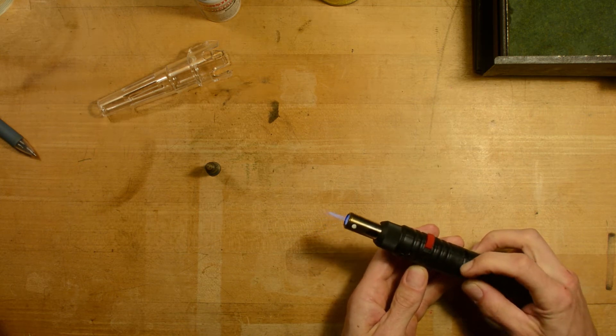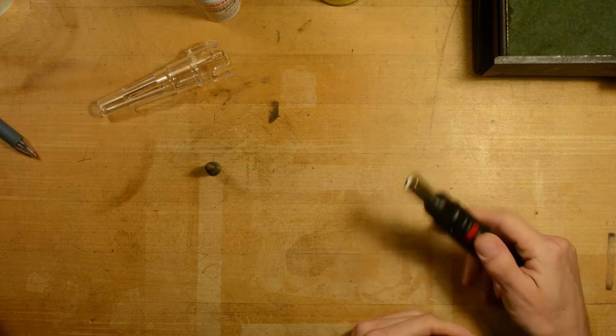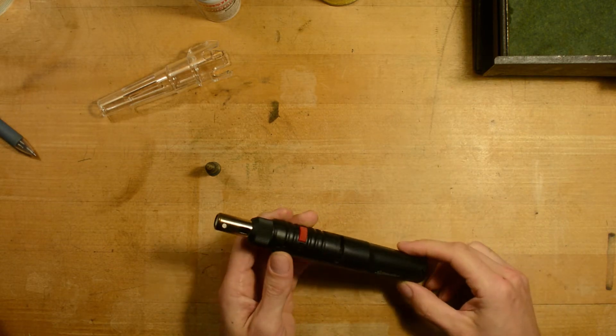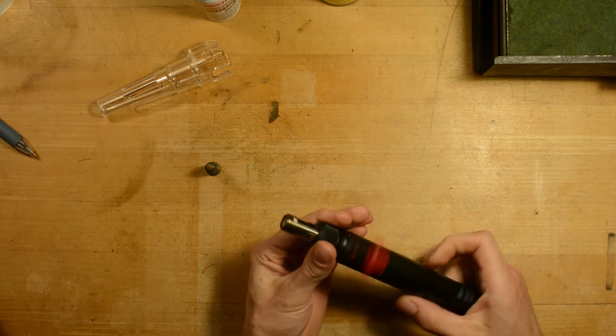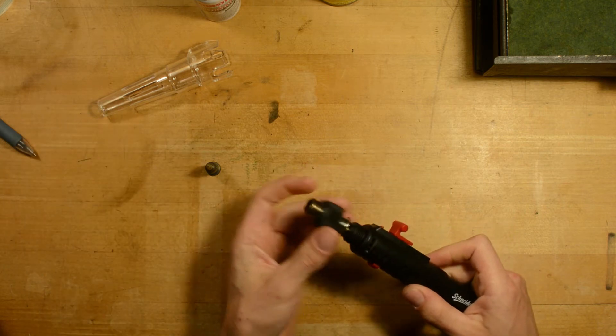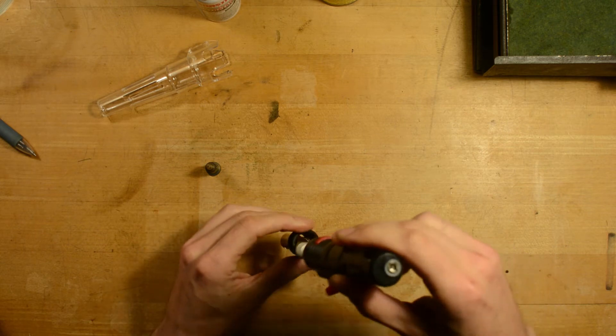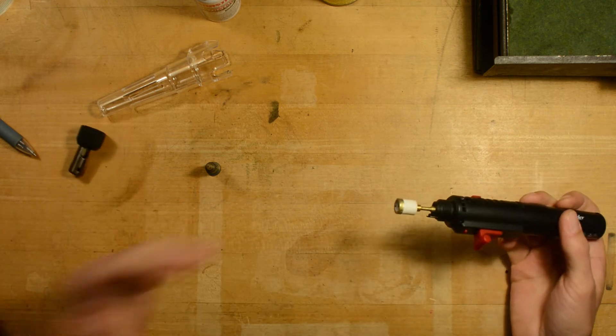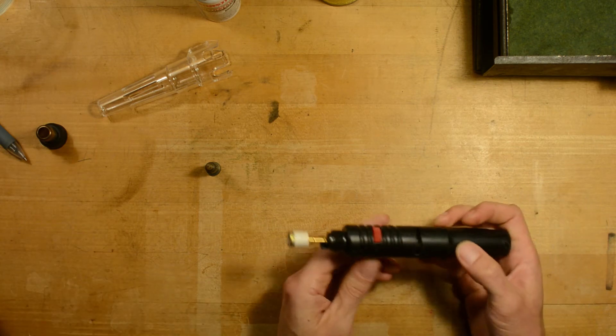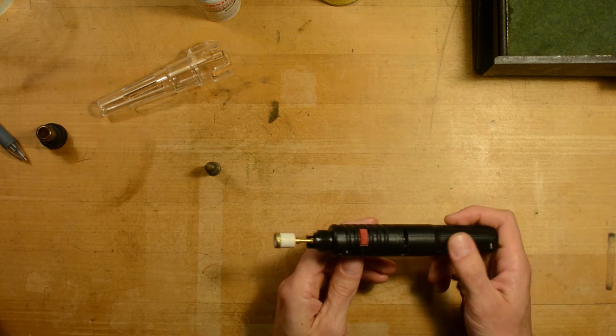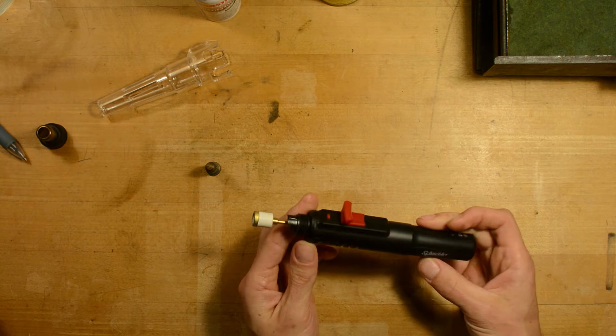Essentially what I did was I first opened it up and was trying to figure out how the heck can I adjust this. I've adjusted lighters before in the past when I was a kid and made them shoot six inch flames, but I wanted to do the opposite with this and make the flame smaller.